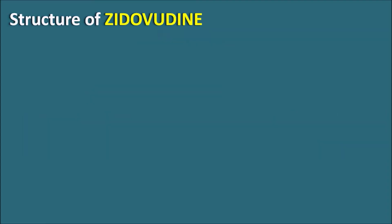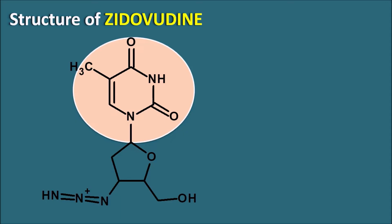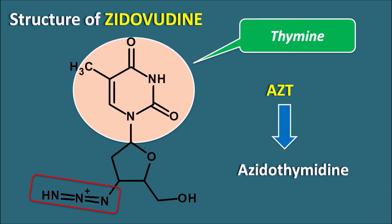Let us see the structure of Zidovudine. There is a nucleic acid base with a heterocyclic ring system made up of pyrimidine — Zidovudine is a pyrimidine analog. More specifically, this is thymine attached with a sugar moiety, making it thymidine. But it is a modified thymidine where one of the OH groups is replaced with an azido group with three nitrogens. That's why Zidovudine is labeled AZT — azidothymidine.